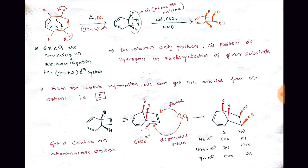To get the cis positions of the two hydrogens in the product, the two hydrogens must move in opposite directions during electrocyclization — that is disrotation. So for a 4n+2 electron system under thermal conditions, disrotation is allowed. This confirms the second option is correct for part A.